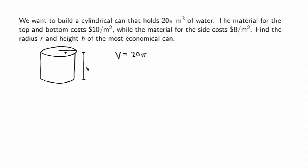I'm not going to carry the units around; I'll reintroduce them at the end. The volume of a cylindrical can is the area of the top times the height, so this is pi r squared times h, and this is fixed. I can solve this equation for h by simplifying the pi's, and I end up with h equals 20 over r squared for all the cans I will construct.